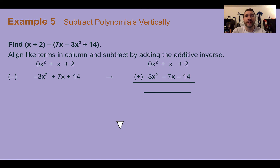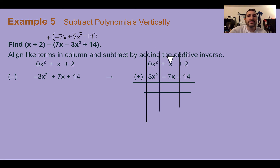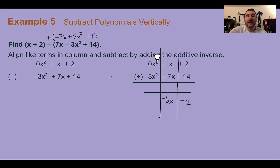Example 5, subtract polynomials vertically. Just like before, the first thing is to add the opposite — so the second polynomial becomes negative 7x plus 3x squared minus 14. Now put everything in standard form and add vertically. Notice we use a placeholder 0x squared for the first polynomial, since it has no x squared term. Adding vertically: 2 plus negative 14 is negative 12; 1x plus negative 7x is negative 6x; and 0 plus 3x squared is 3x squared. Final answer: 3x squared minus 6x minus 12.